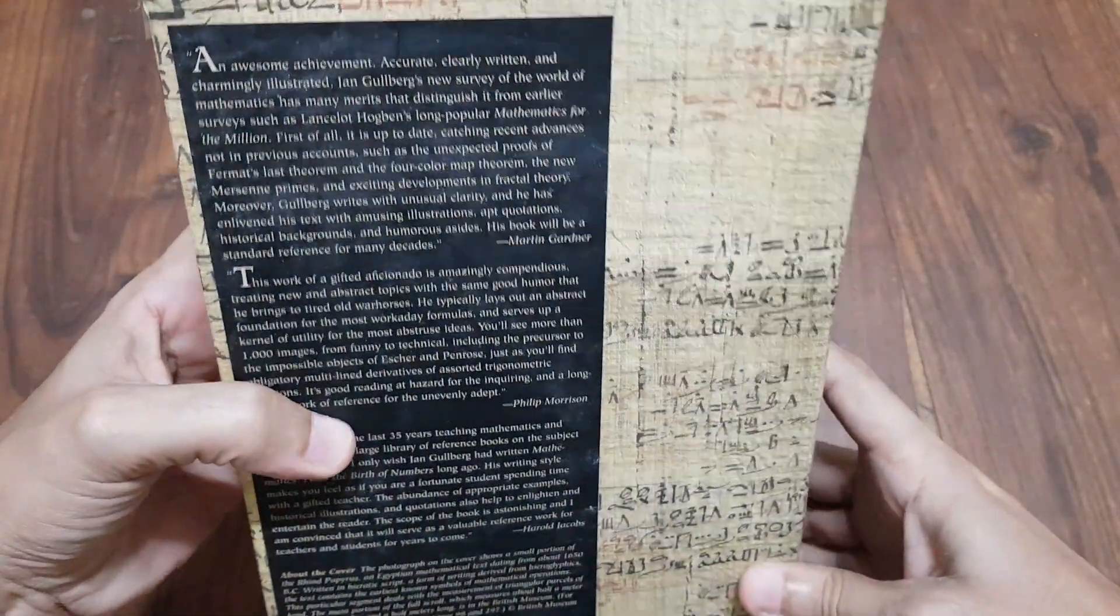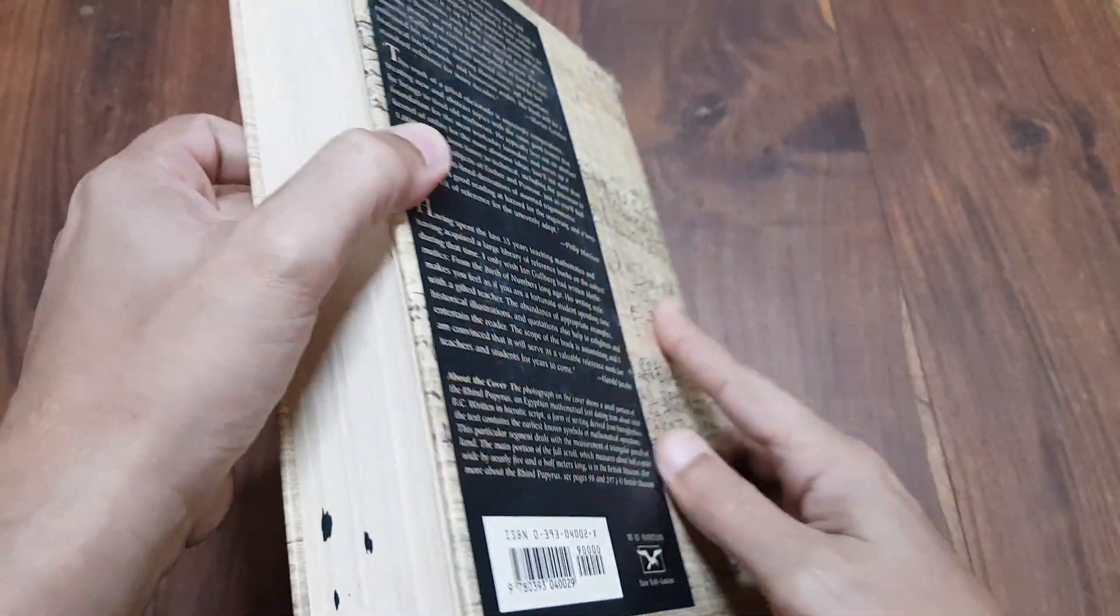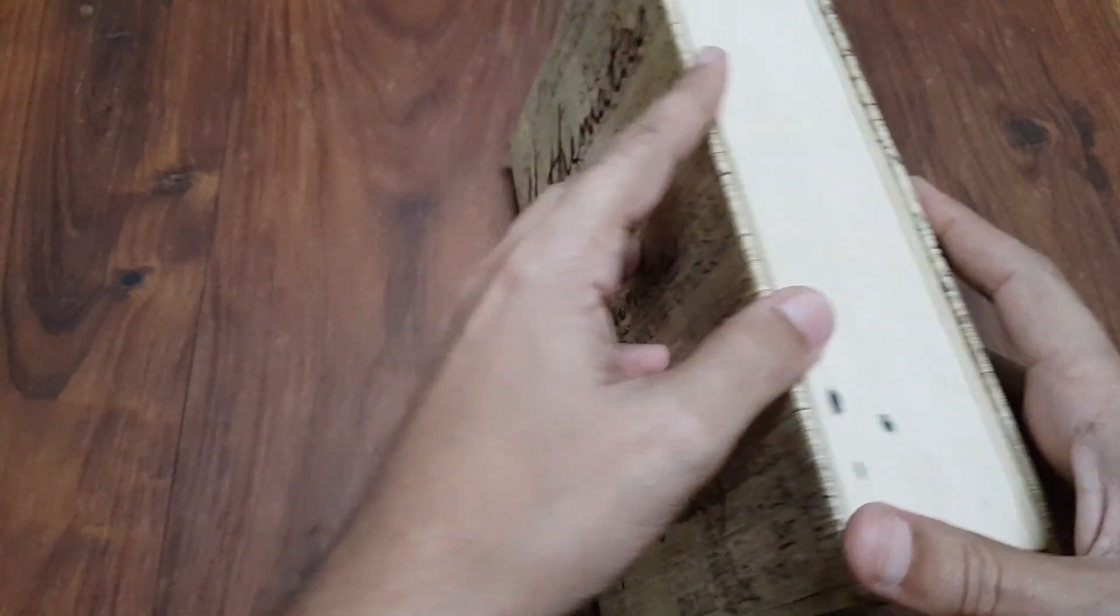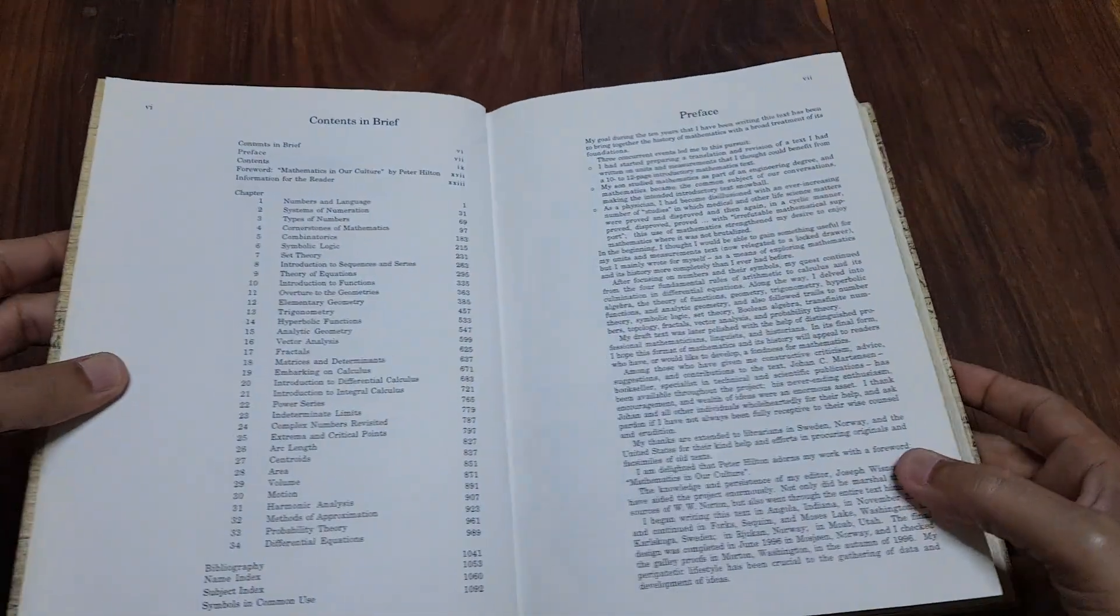Mathematics: From the Birth of Numbers by Jan Gullberg is a comprehensive and engaging exploration of mathematics suitable for both enthusiasts and those with a casual interest in the subject.